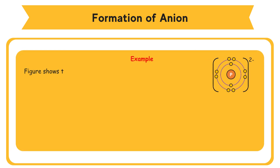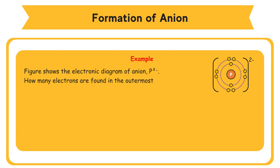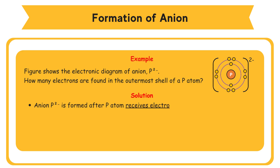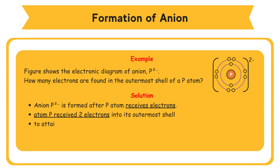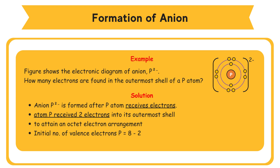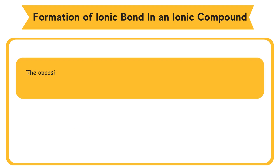Example: the figure shows the electronic diagram of anion P²⁻. How many electrons are found in the outermost shell of a P atom? Solution: the P²⁻ anion is formed after P atom receives electrons. The charge of −2 indicates that atom P received 2 electrons into its outermost shell to attain an octet electron arrangement. Therefore, the initial number of valence electrons of P = 8 − 2 = 6.